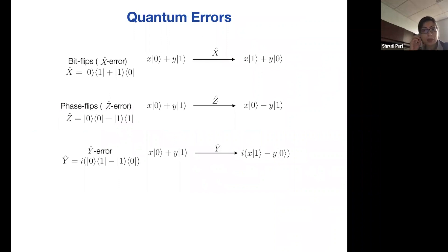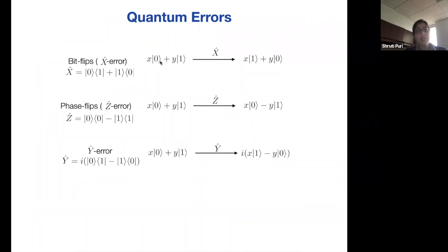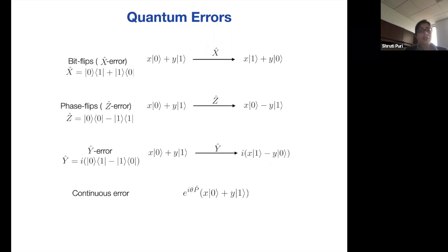Now let's talk about quantum error correction in this system. You can decompose any single-qubit quantum error as a combination of bit flips, phase flips, and Y errors. A bit flip is like the action of an X operator on your state — it flips 0 to 1 and 1 to 0. A phase flip is like the action of the Pauli Z operator — it puts a phase difference between the 0 and 1 states, so you lose phase information. A Y error is like the action of both X and Z operators — you're not only making a bit flip but also messing up the phase information. You can also have continuous errors, where P is just some Pauli operator X, Y, or Z. Our aim is to be able to correct for all of these errors.